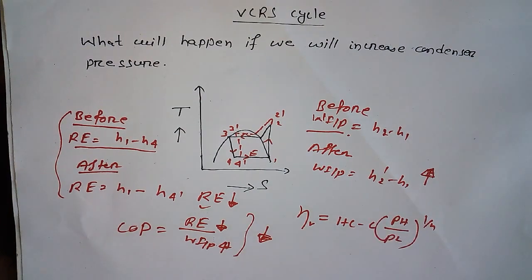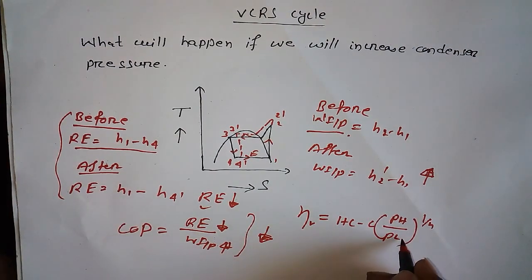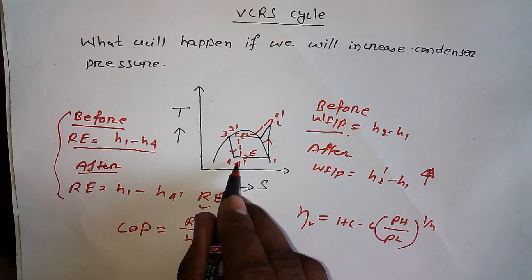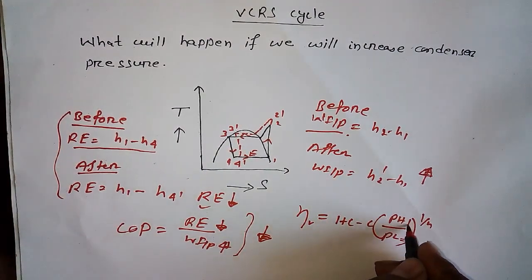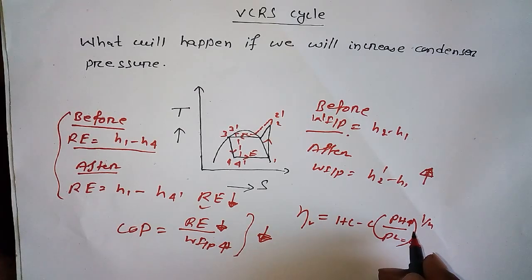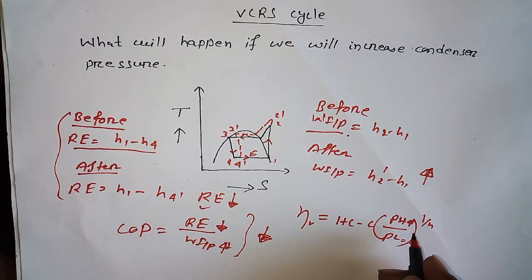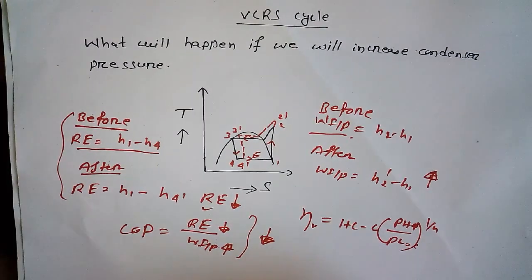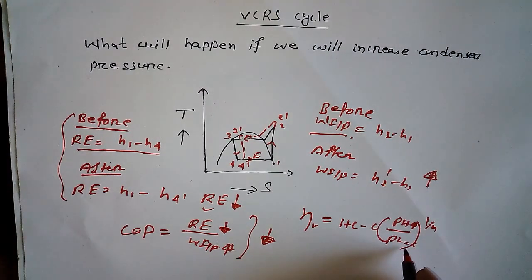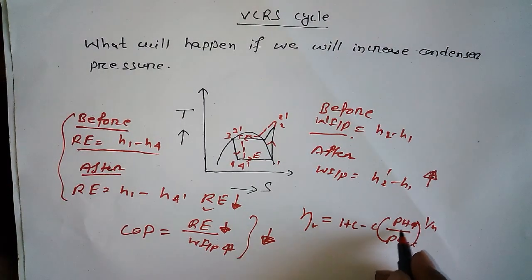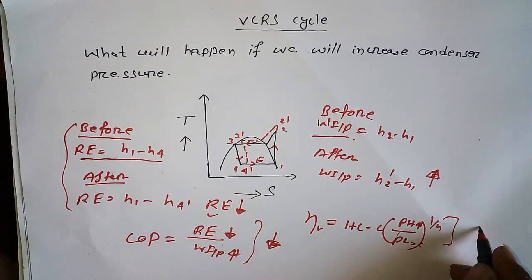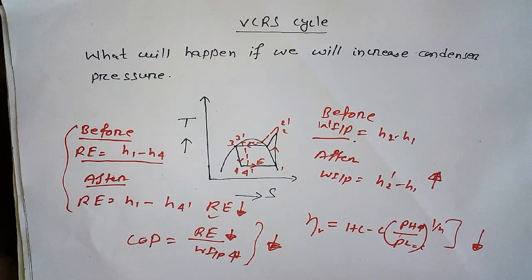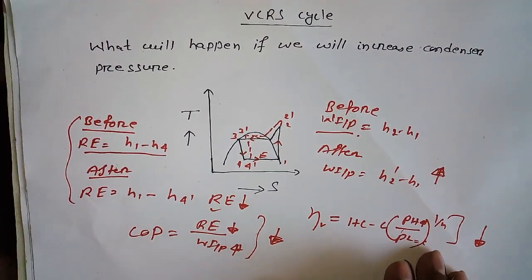n is the polytropic index. Here, P_L is constant, but P_H is increasing. That means the whole term will increase, and if this term increases, then volumetric efficiency will decrease.